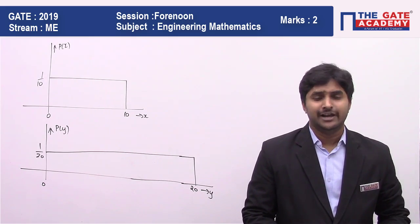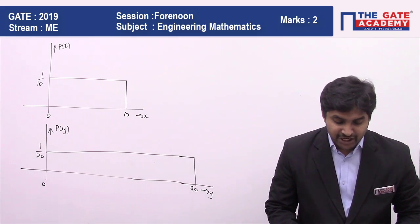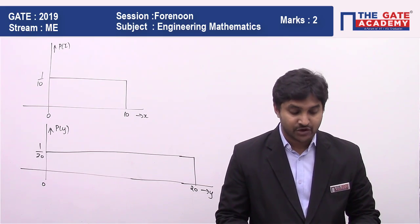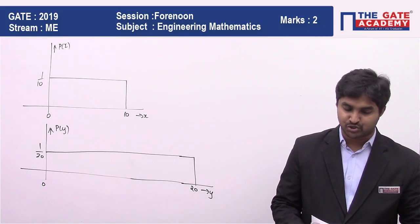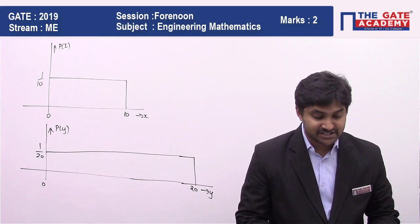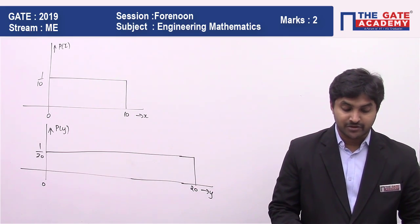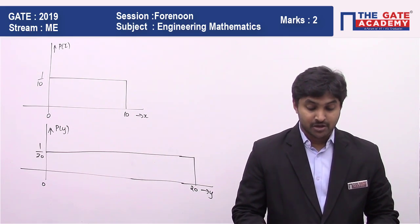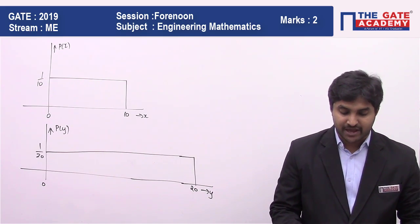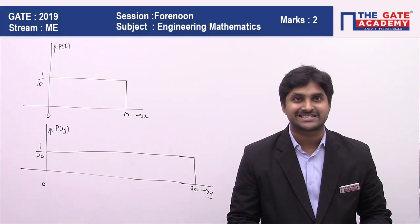First of all let me read the question. The variable x takes values between 0 and 10 with uniform probability distribution. The variable y takes values between 0 and 20 with a uniform probability distribution. The probability that the sum of variables x plus y being greater than 20 is dash.